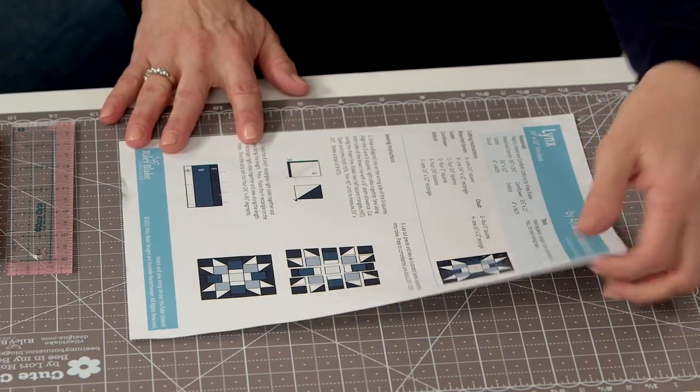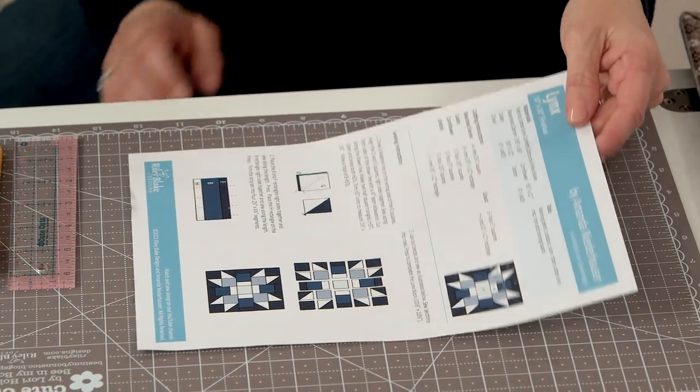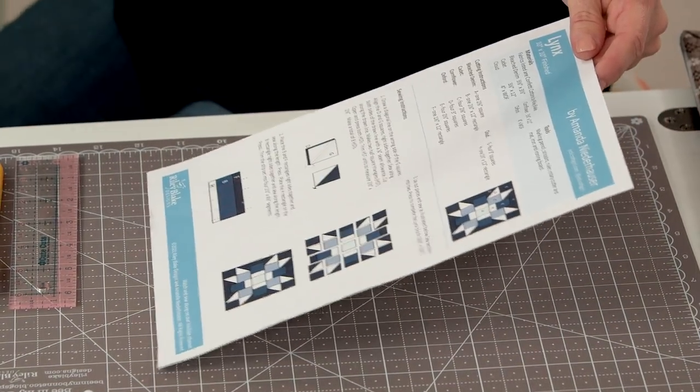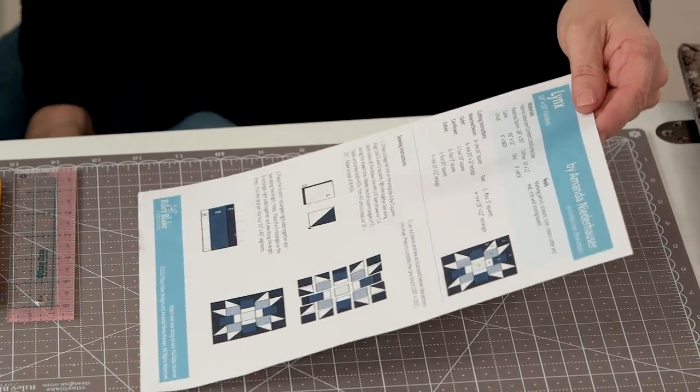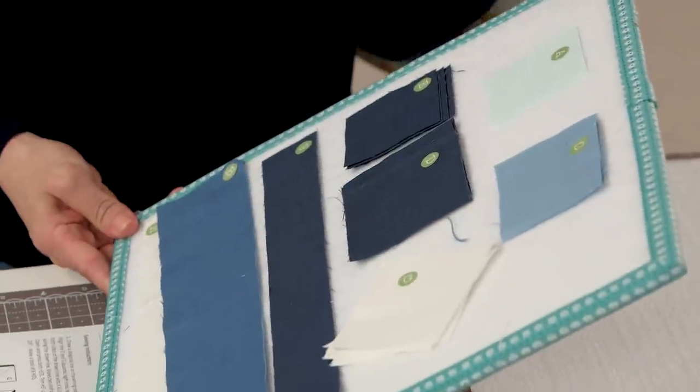Of course, the first thing you need to do is download the pattern from our Riley Blake Designs website. It's called Lynx and all the materials and the cutting instructions are there for you. I have previously cut out all of my pieces and labeled them.